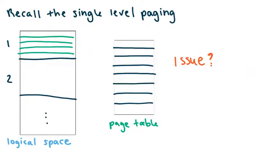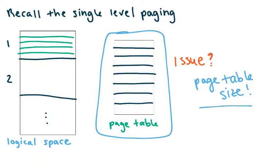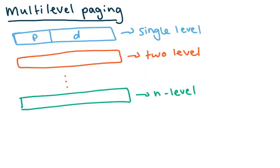The issue with single-level paging is that these page tables can get really, really big. In the paging introduction last time, we gave one example that ended up being a 512 gigabyte page table — and remember, these page tables have to sit in memory, so that's a lot of memory to take up. The solution we decided on is multi-level paging.